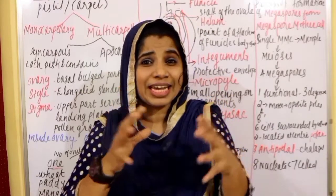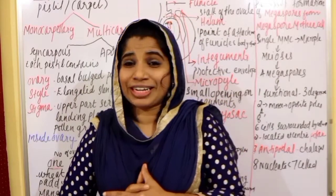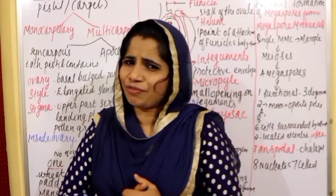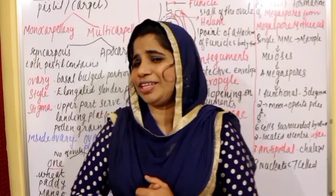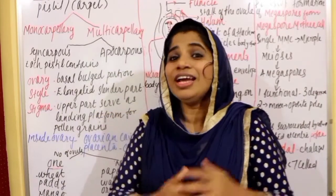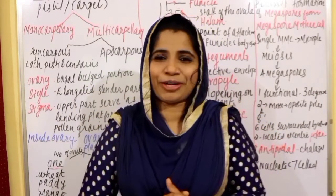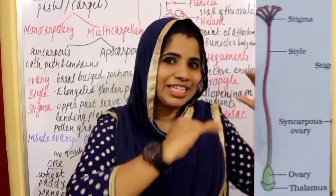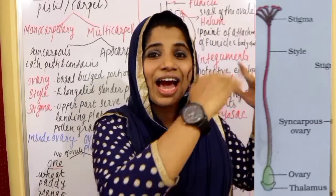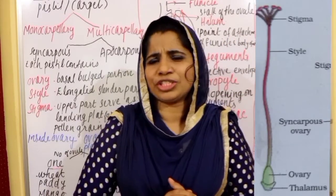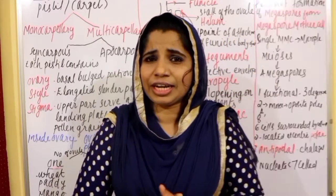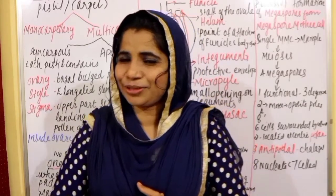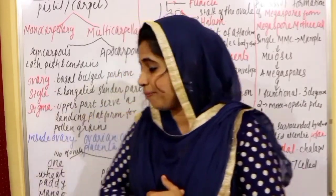Now, a single carpel has three parts. The first part is ovary, style, and stigma. If you are aware of these parts, you will be able to understand this chapter.